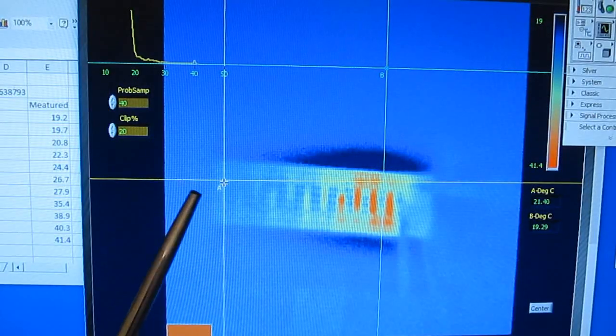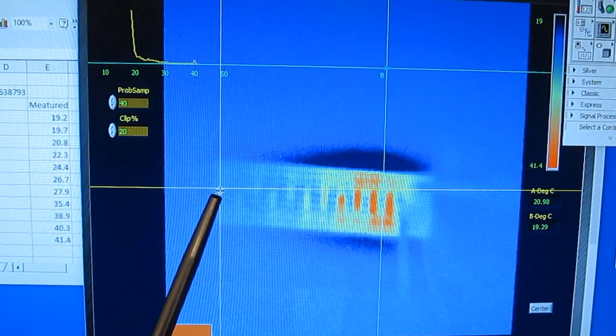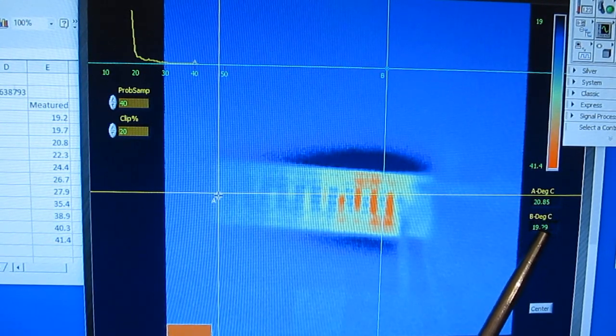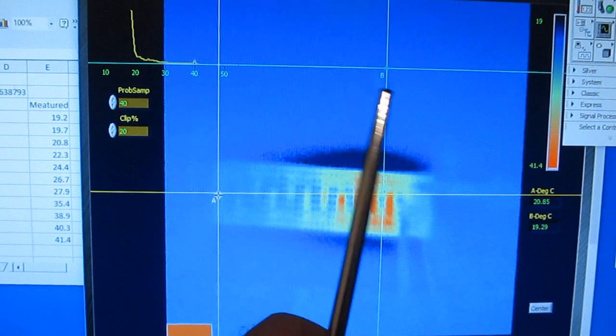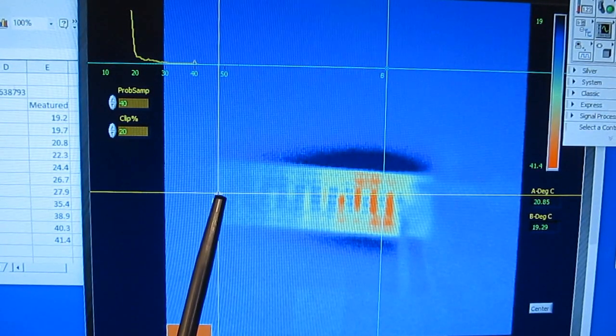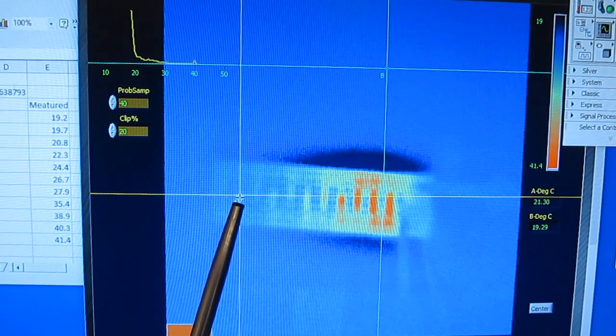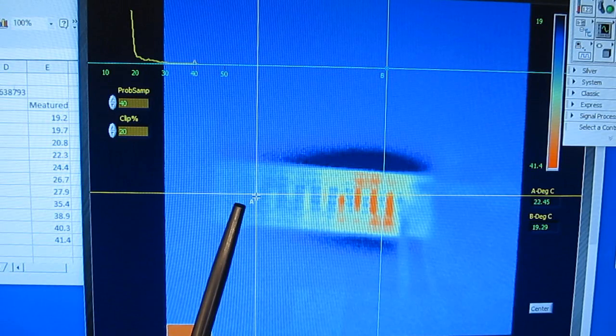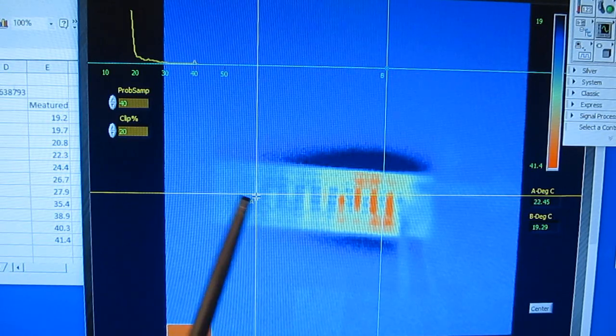So if we put our A cursor on the very first resistor, the B cursor is on the ambient. So this is 19.29 up here. Right here it looks like we're measuring 20.85, and then 21.30, and then 22.45.